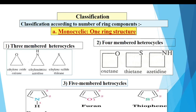Now we will see the classification of heterocyclic compounds. Classification according to the number of ring components: if only one ring is present, this type is called monocyclic heterocycles. Examples of three-membered heterocycles are ethylene oxide and ethylene imine, also known as aziridine. Similarly, four-membered, five-membered, and six-membered heterocycles are present, each with one heteroatom. This is the classification based on the number of ring components.